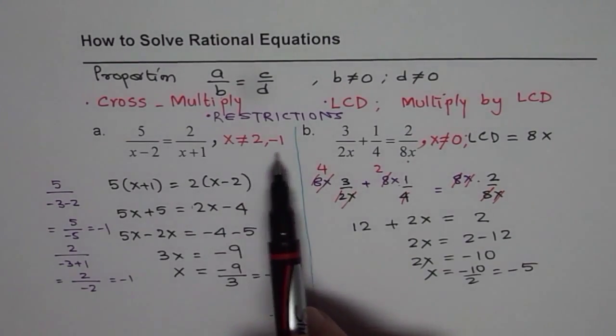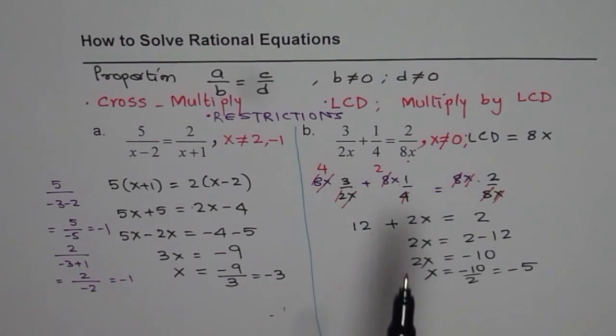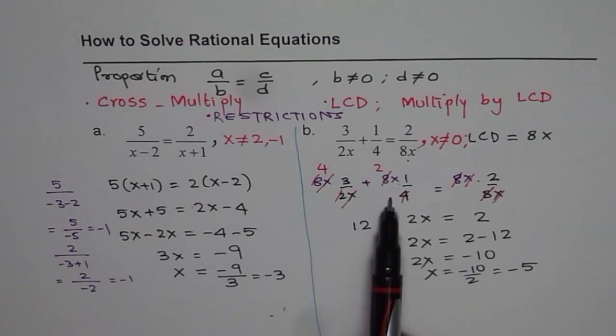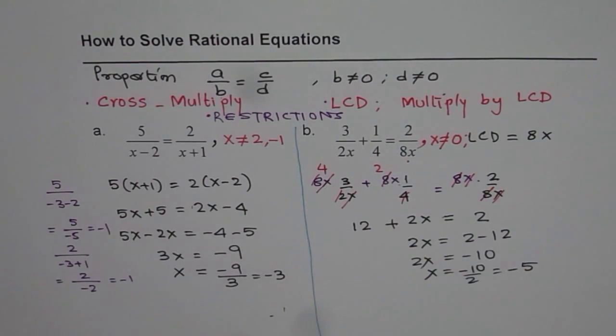If it is not a proportion kind, then find the lowest common denominator. Multiply each term with lowest common denominator, simplify and get the answer. I hope that will help you to get all the questions correct.